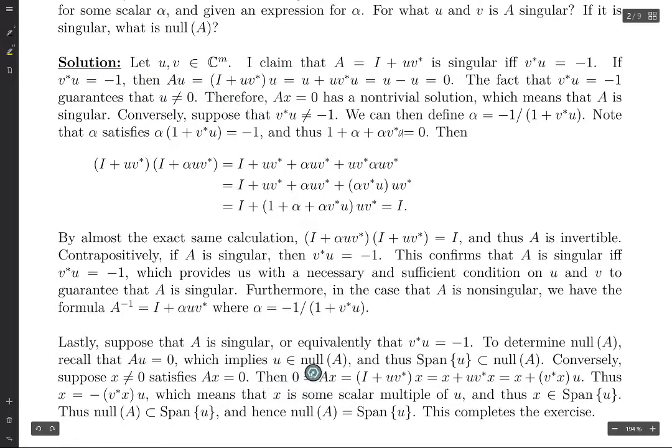And if U is in the null space of A, then any constant multiple of U must also be in the null space. Because if A U equals 0, then if C is just some constant, then A times C U equals C times A U, which is C times 0, which is 0. Therefore, any constant multiple of U is in the null space of A. Therefore, the span of U is contained in the null space of A.